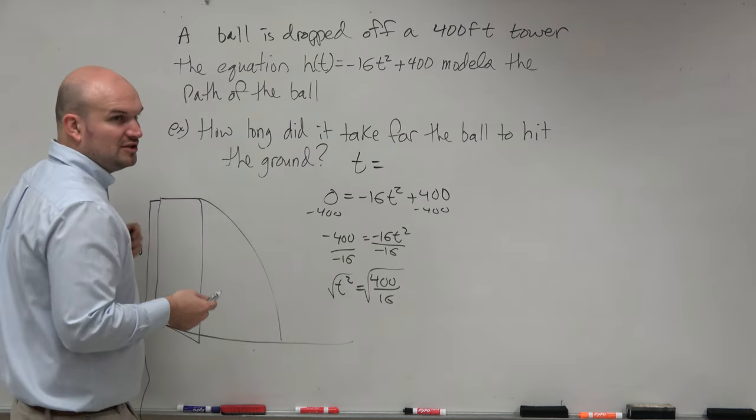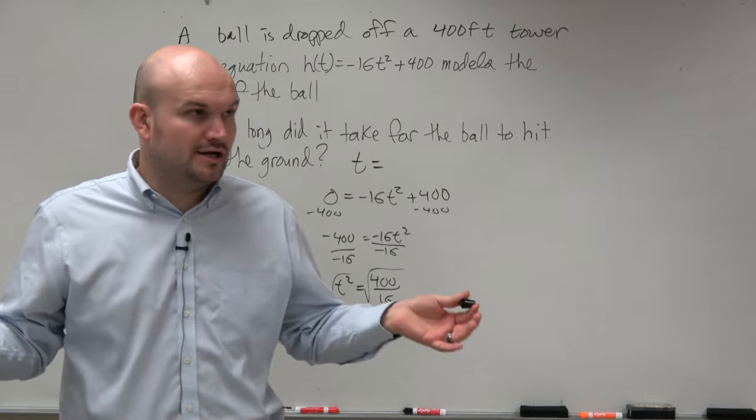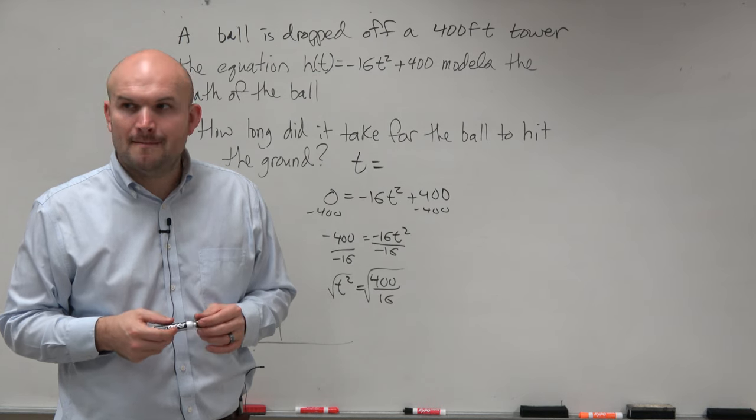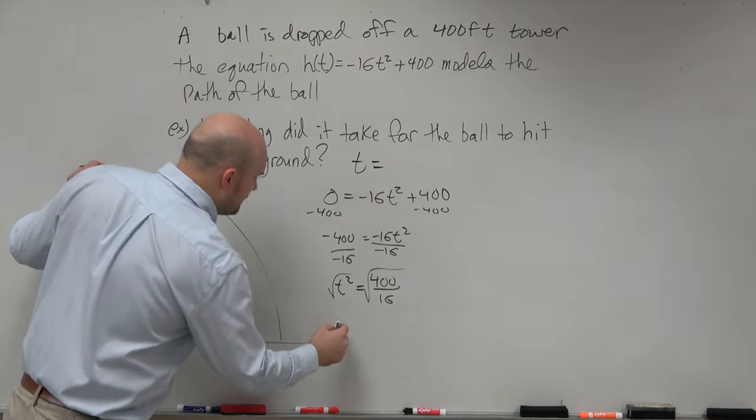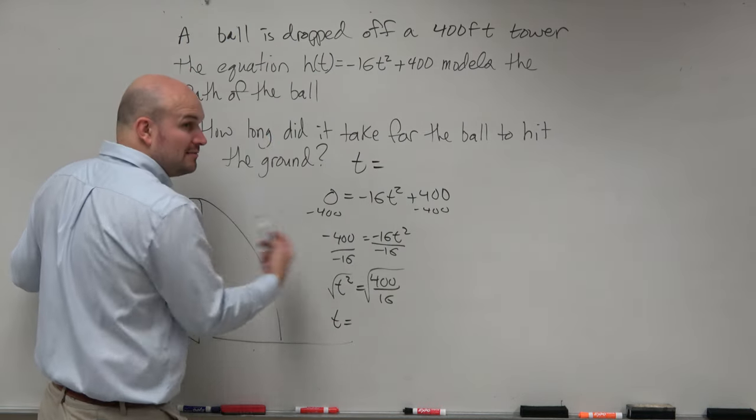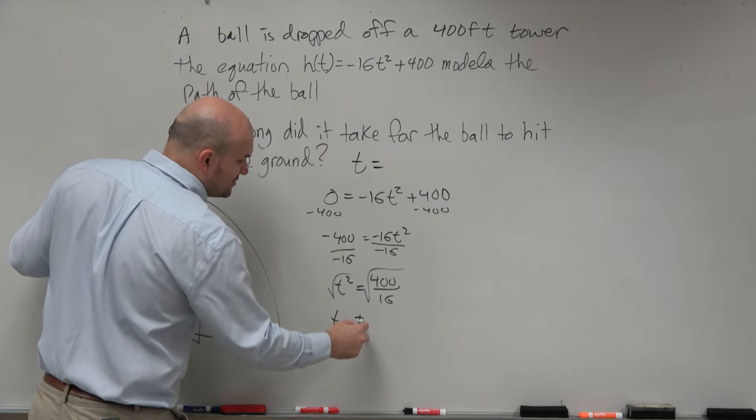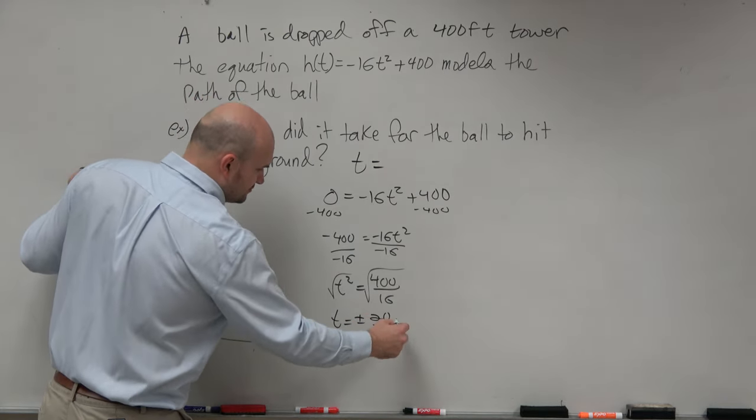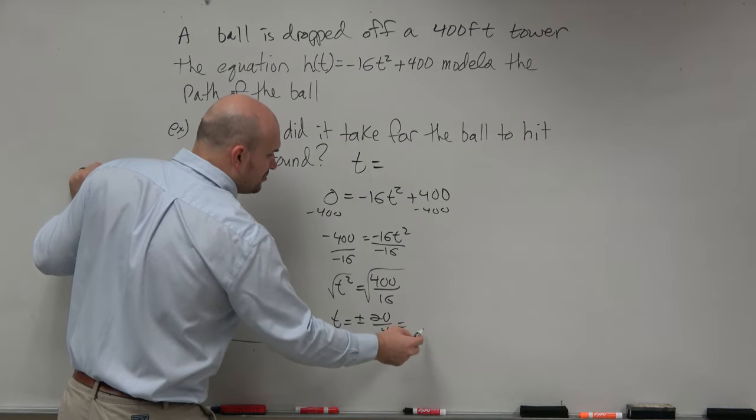Go ahead and take the square roots on both sides. Well, what number multiplied by itself gives us 400? Well, I know 2 times 2 gives me 4. So what about 20 times 20? Does that give me 400? Yeah. So therefore, t is equal to, now remember, when we're taking the square root, we're going to introduce plus or minus. So that's going to be 20 over 4, which is equal to plus or minus 5.